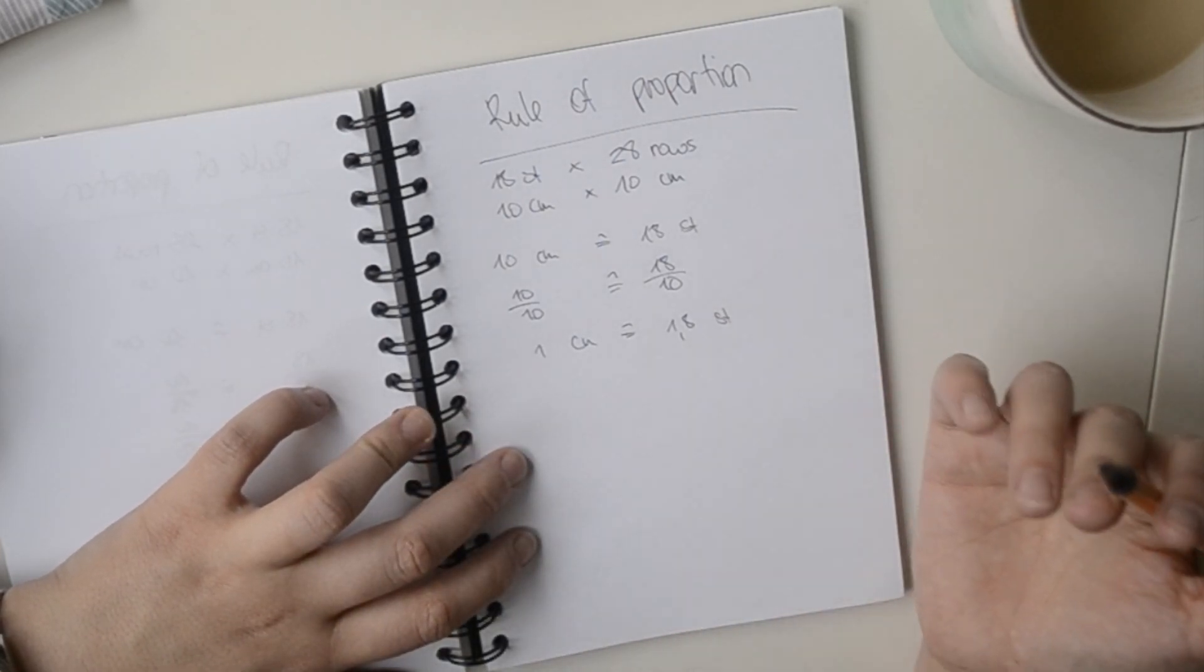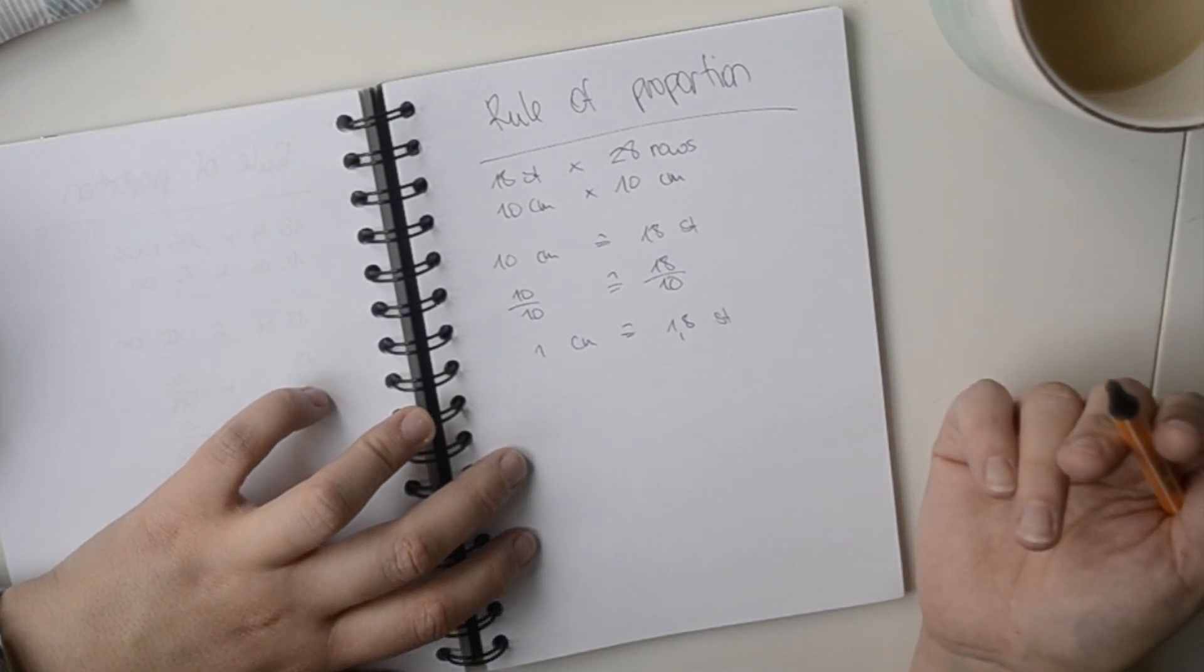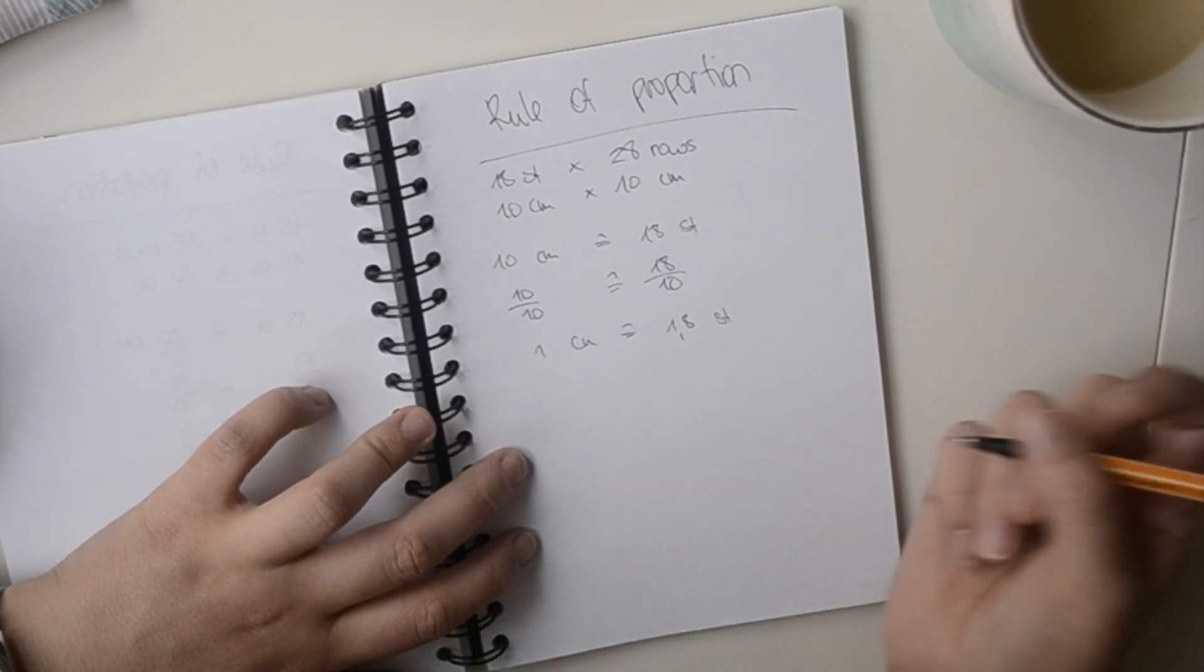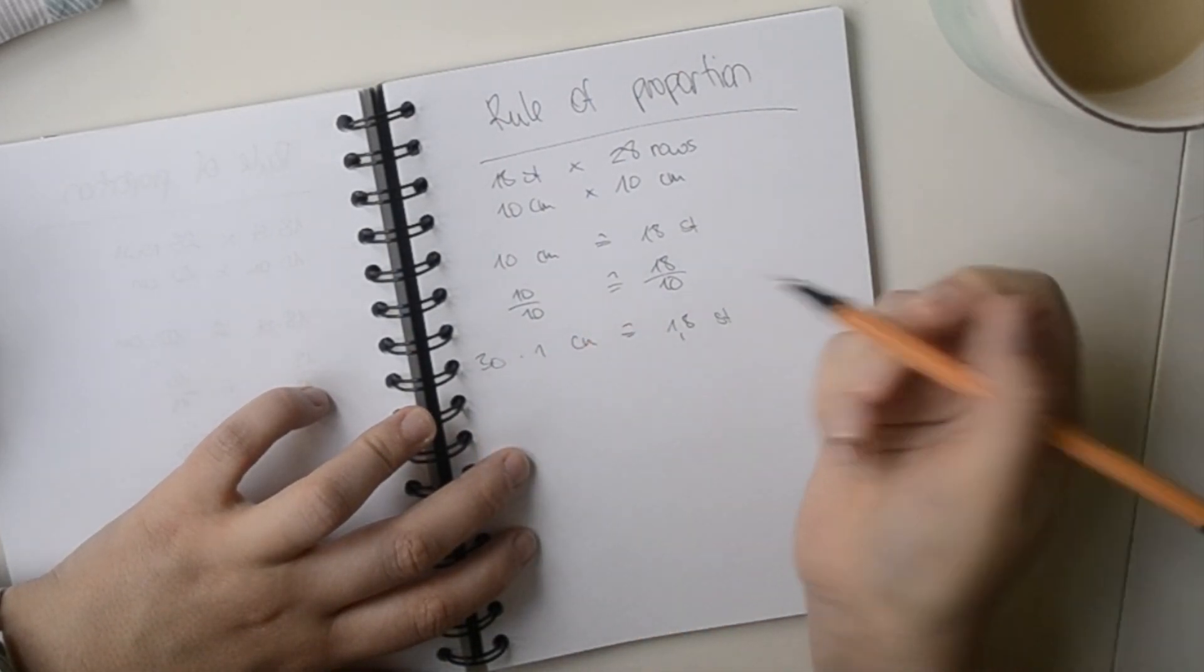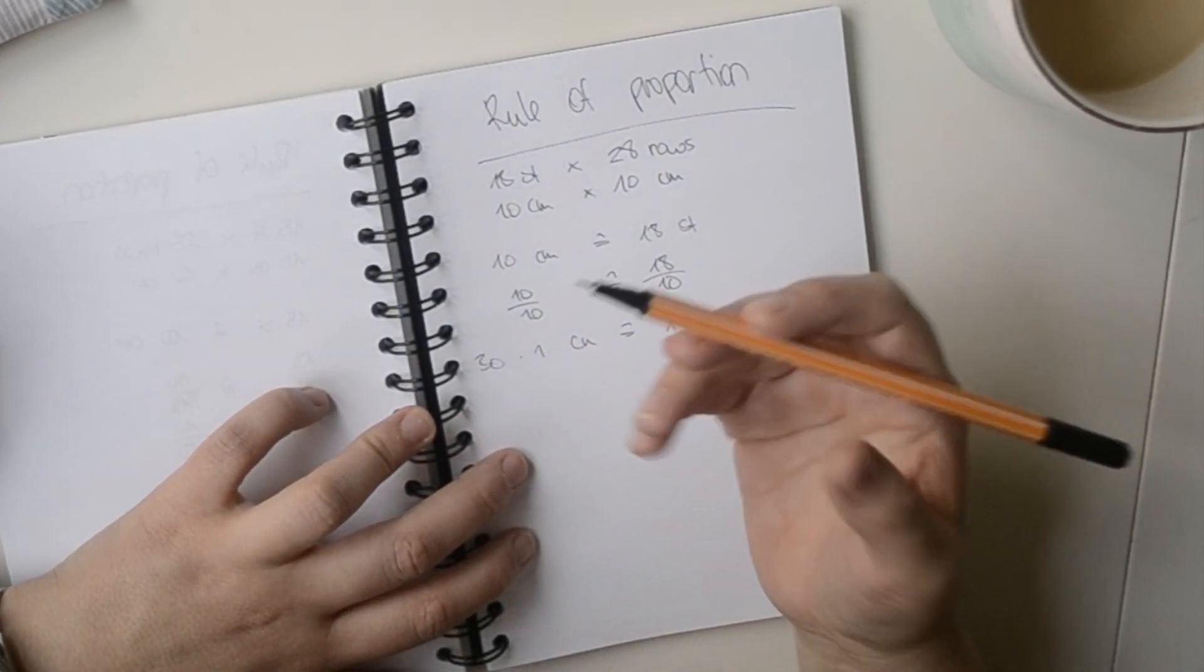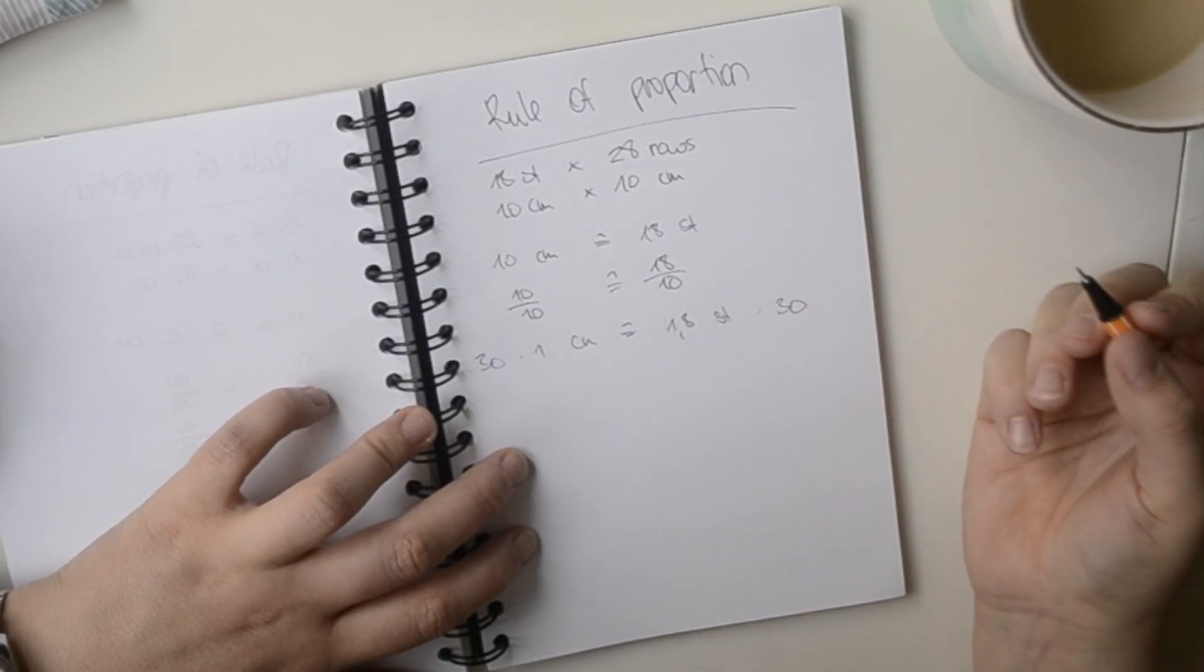Now I said that I wanted to know how many stitches I would have for 30 cm. So now I can multiply everything by 30. 30 times 1 is 30, and 1.8 stitches times 30.